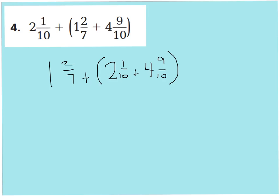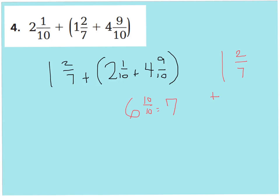Remember, with order of operations you always do what is inside the parentheses first. So 2 and 1 tenth plus 4 and 9 tenths equals 6 and 10 tenths, which also equals 7 wholes. Now I rewrite this as 1 and 2 sevenths plus 7 wholes, which gives a final sum of 8 wholes and 2 sevenths.